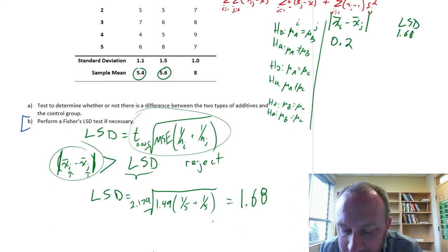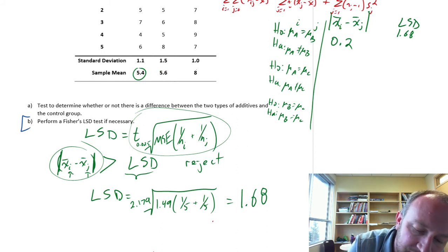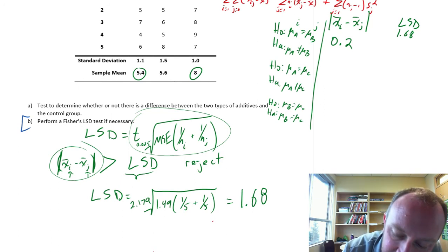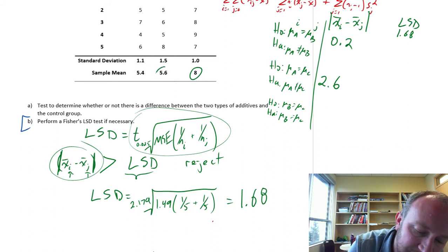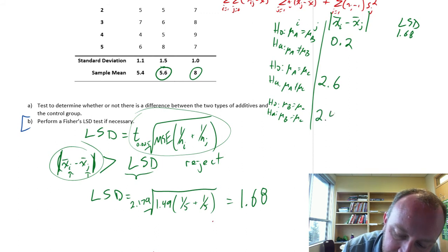When we look at a and c, we're comparing, I'm looking at 8 against 5.4. That's going to be a value of 2.6. And finally, b and c. I'm looking at these two. That will be a value of 2.4.